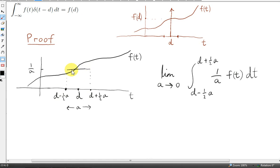The height of the function is 1 over a. It's a constant. So we're multiplying 1 over a by f(t) for values of t between d minus a half and d plus a half.